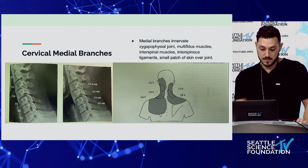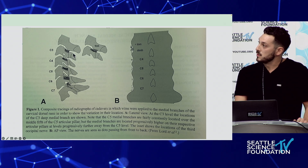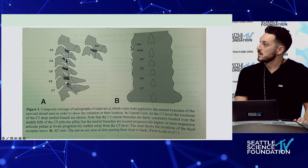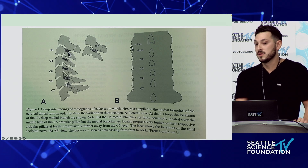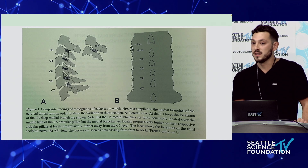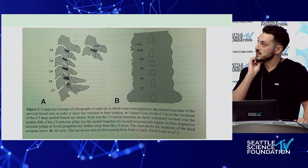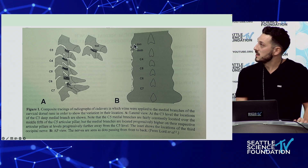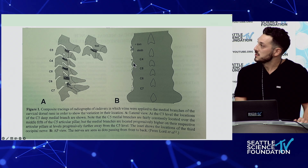The medial branches innervate the facet joint, the multifidus muscles, interspinous ligaments, and a small patch of skin over the joint. From the Spinal Intervention Society textbook, they superimposed wires that ran over each of the medial branch nerves to show where the nerve lies. There's some variability in where the nerve actually runs - you can mediate this by doing two burns or adjusting your needle. The nerve is not always in the exact same position, so understand that you need to make sure you're going to actually cover the nerve.